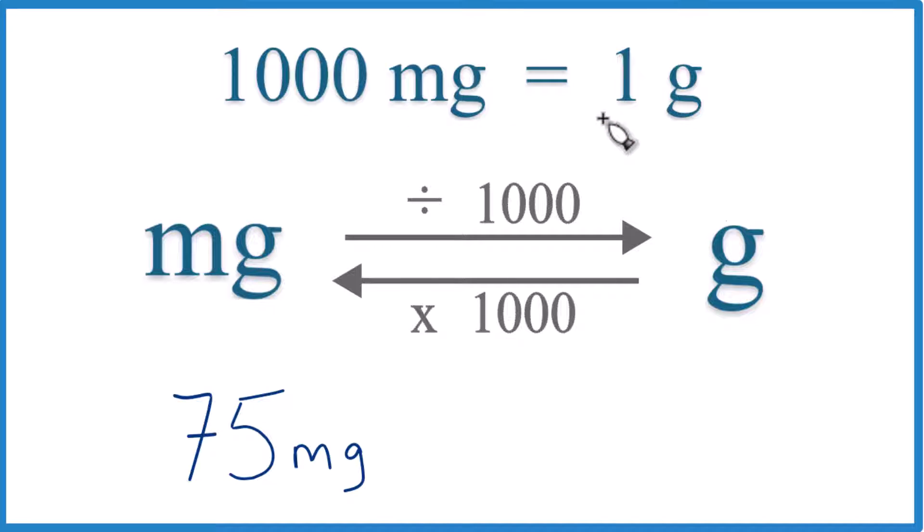And we call that a conversion factor, and we need it when we're converting from milligrams to grams or grams to milligrams. In this case, we have 75 milligrams, and we want to go over here to grams. So we're going to divide by 1,000.